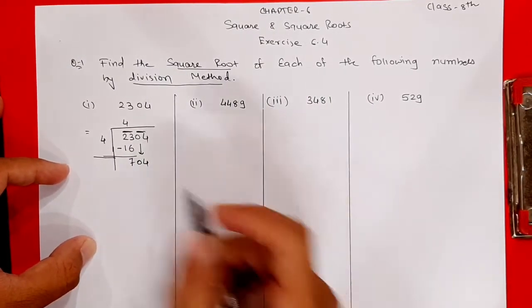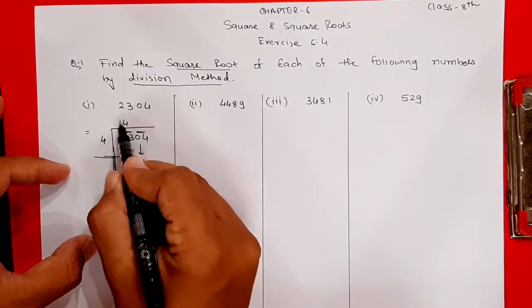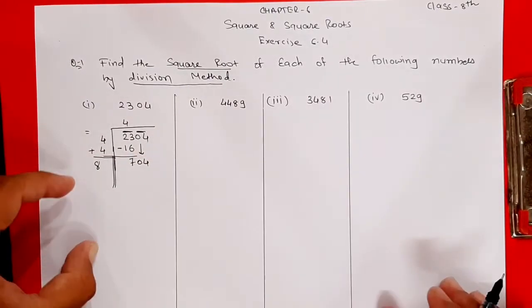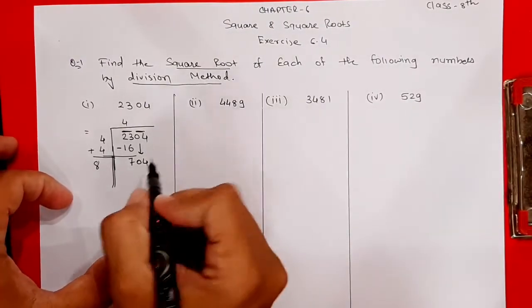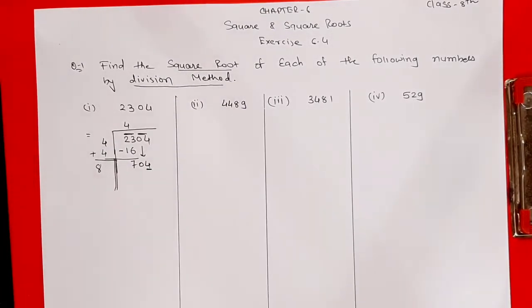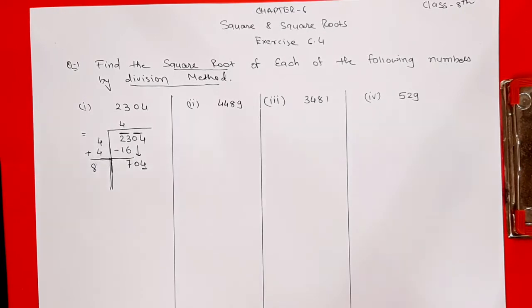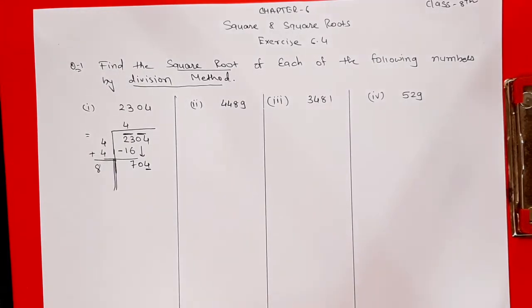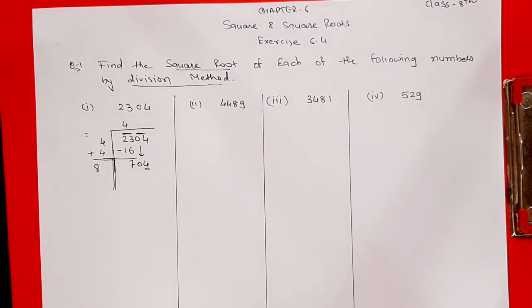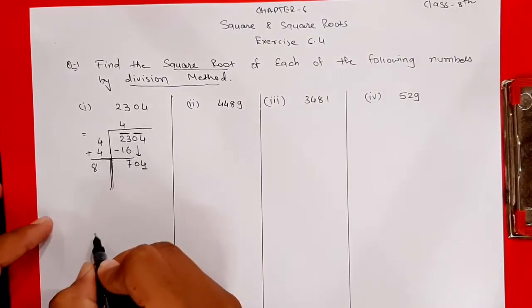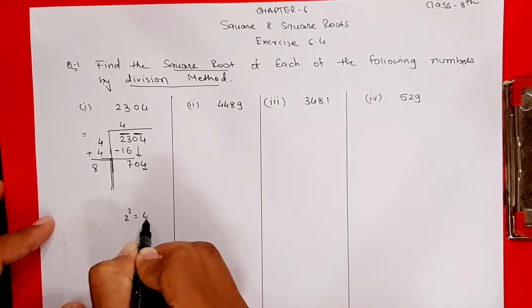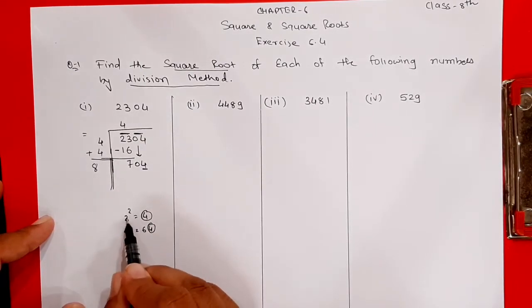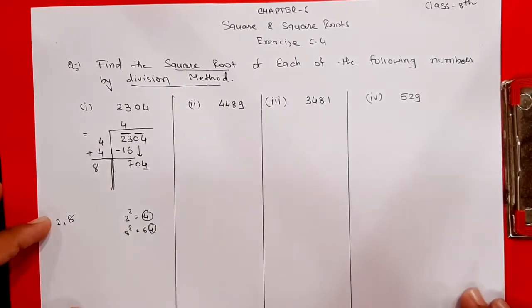Now add the quotient digit 4 with itself: 4 + 4 = 8. Now check the last digit of the current remainder - it is 4. We know from the squares of 1 to 10 that 4 appears at the end of squares of 2 and 8: 2²=4 and 8²=64 both end in 4. So the next digit can be either 2 or 8.